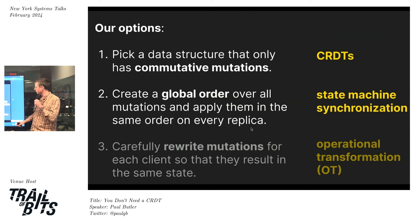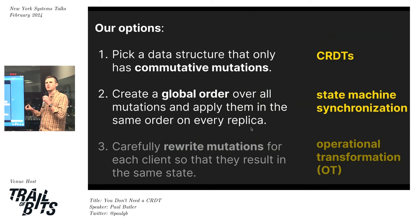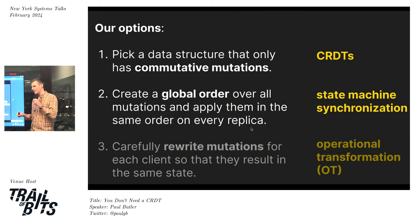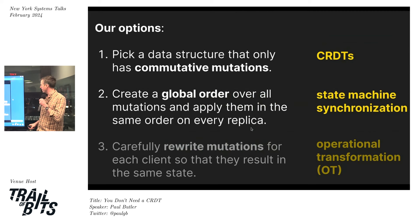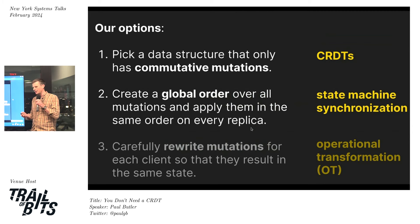There's a third option: a central authority that knows the state of every client and rewrites mutations as they come in so that client gets the right thing. This is as tricky as it sounds. It used to be a bigger thing when clients were dumber. Google Docs, I believe, still works that way - it's called operational transformation. You don't see it as often these days, and I'm not going to talk about it in this talk.